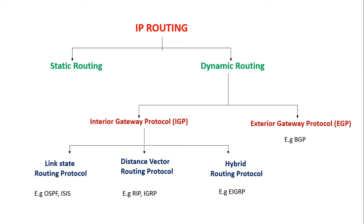Welcome to this discussion on IP routing. Routing is a process of moving a packet from one network to another using a device known as a router, via the shortest path. There are two methods available for routing: static routing and dynamic routing.